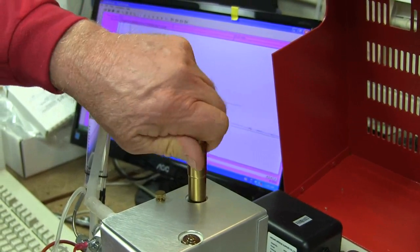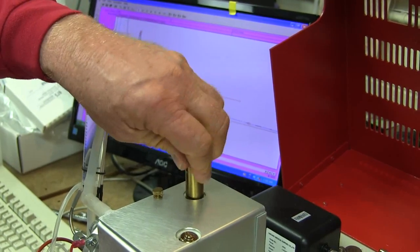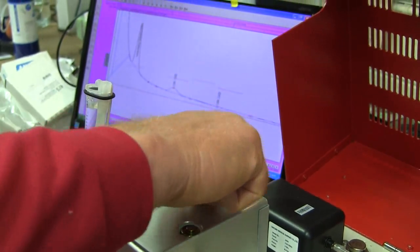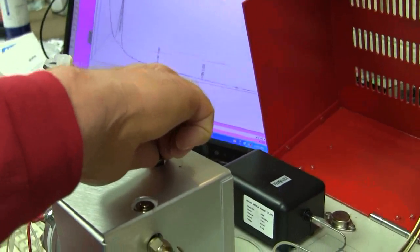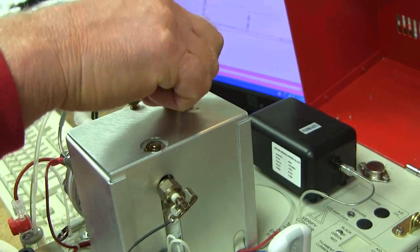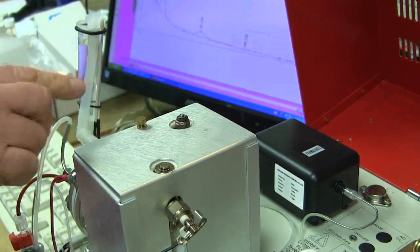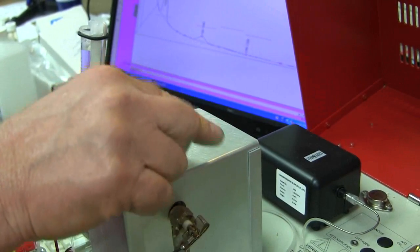So if it's cold, it's easy to feel. So you just catch the threads and then turn it maybe a full turn. You can kind of feel when the septum touches the corresponding fitting that it's sealing against.